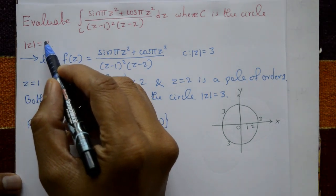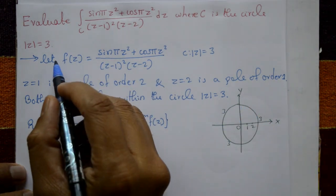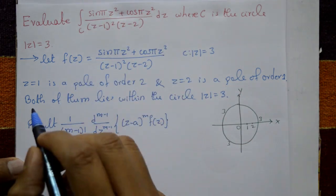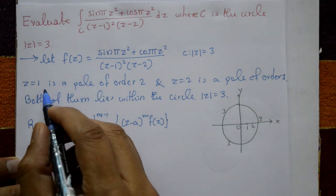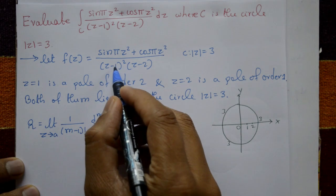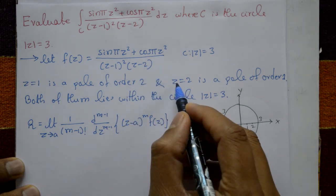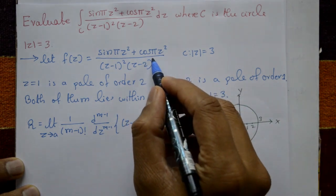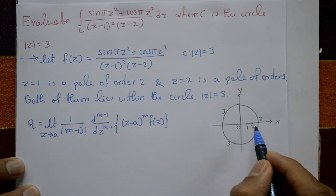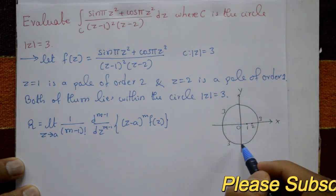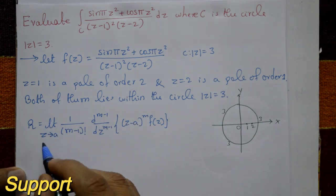|z| = 3 means this is a circle with radius r = 3. Now, the given function is f(z). Taking the poles: z = 1 is a pole of order 2, and z = 2 is a pole of order 1. Both poles lie within the circle |z| = 3.